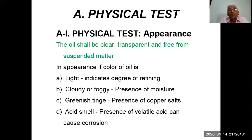For the physical test on appearance, the oil shall be clear, transparent, and free from suspended matter. A light color indicates the degree of refining. Cloudy or foggy appearance indicates presence of moisture. A greenish tinge indicates presence of copper salts. An acid smell indicates presence of volatile acid, which can cause corrosion.